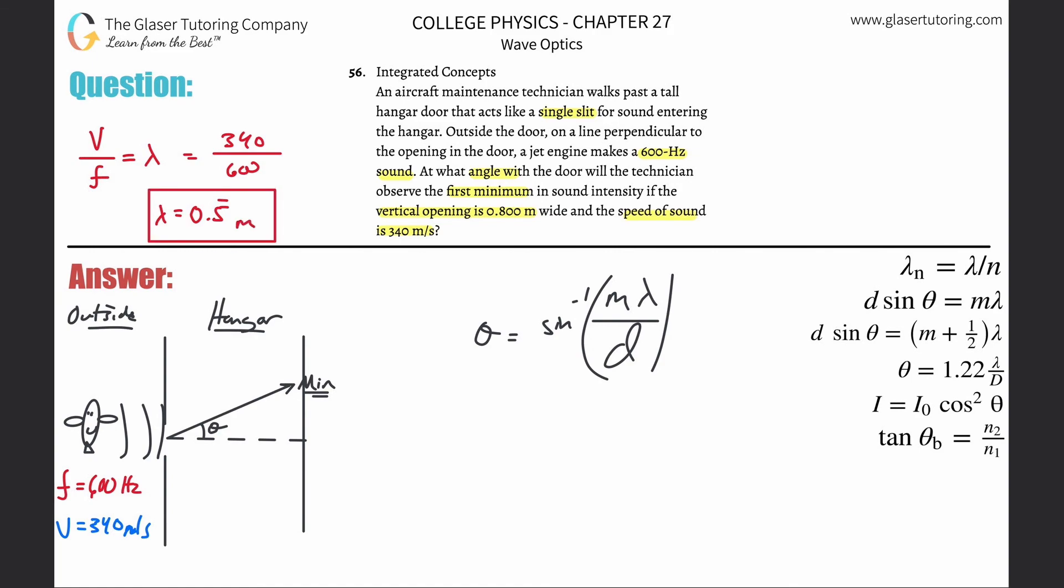So now I do know the wavelength, and do we know the slit opening? Well it says yeah, vertical opening of 0.8 meters, right? So let's do it. So inverse sine of one multiplied by the wavelength of 0.5 repeating, divided then by the distance there. Everything is a meter, so we're good, so we just plug and chug. So inverse sine of that value divided by 0.8.